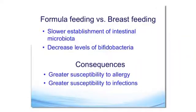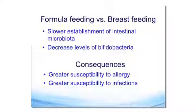Not only is breast milk not sterile, it provides a constant and regular dose of microbes. Formula feeding, which is sterile compared to breast feeding, leads also to a slower establishment of intestinal microbiota, a decrease in diversity, and a decrease in bifidobacteria, with similar consequences.